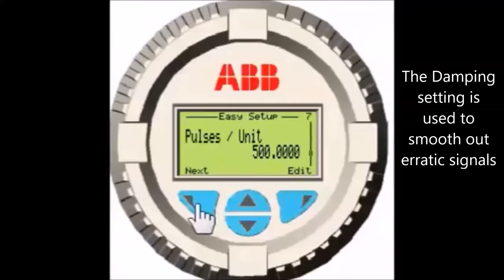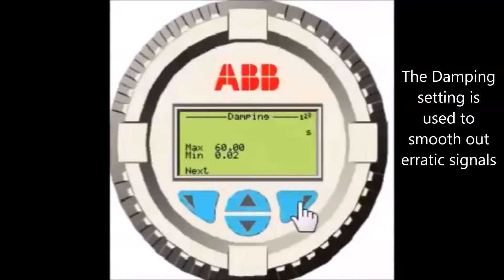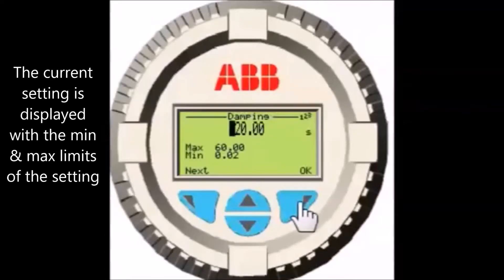The damping setting is used to smooth out the incoming signal excursions and is measured in seconds. This simply slows down the meter's response to changes in flow.